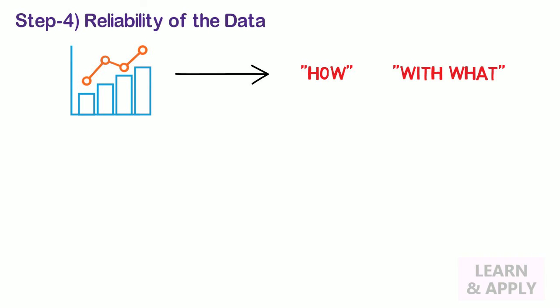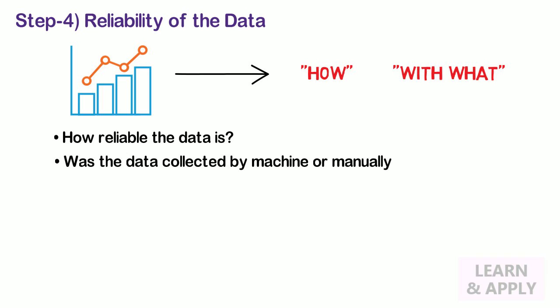Step 4: Reliability of the data. After determining what we want to measure, we have to ask questions like how and with what. For example: How reliable is the data? Was the data collected by machine or manually? Under what conditions are you going to measure?